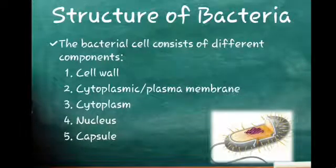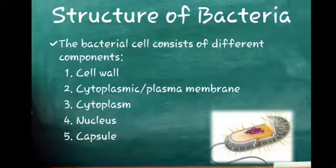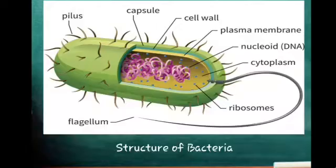The structure of bacteria: the bacterial cell consists of various components including cell wall, the cytoplasmic membrane or plasma membrane, cytoplasm, nucleus, and capsule.